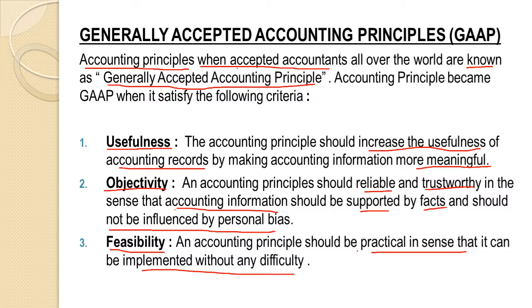Objectivity means that whatever principle we follow should be reliable and supported by facts. For example, in the treatment of depreciation, we should be able to justify the method used and there should be no personal bias. Third is feasibility — an accounting principle should be practical in the sense that it can be implemented without any difficulty.